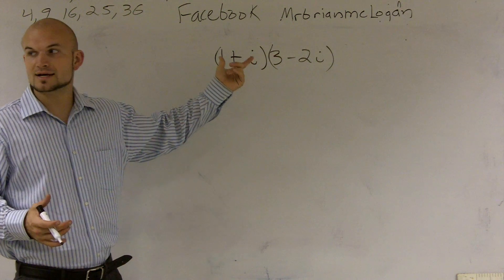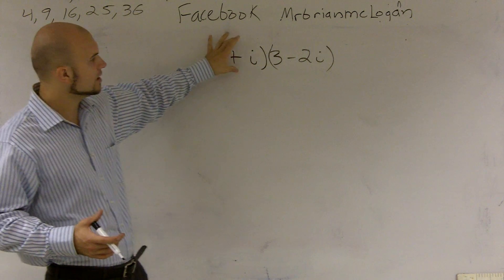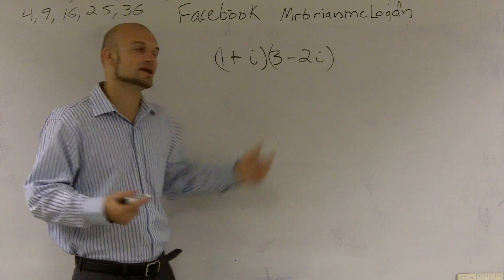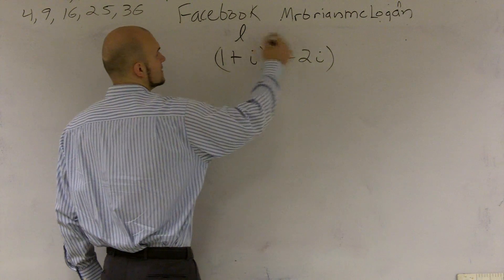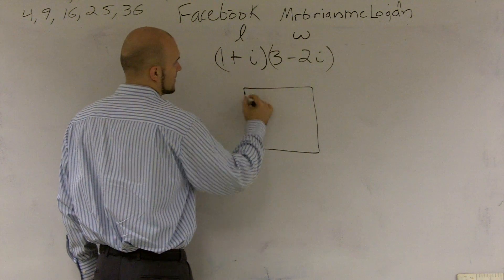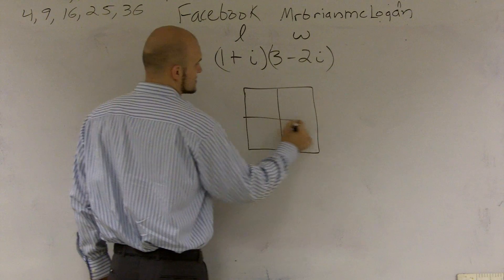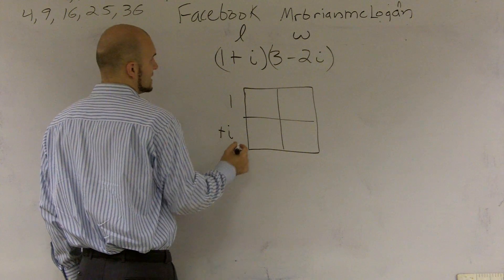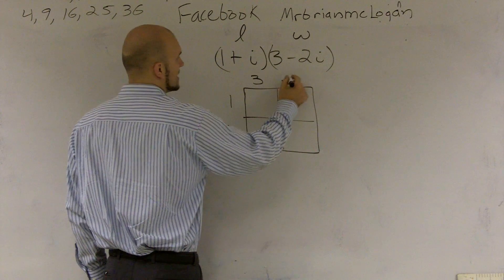If you guys can think of these as one term times another term, the same thing like finding the area. If we could say like this is the length and this is the width. So what I'm going to do is I'm going to draw a box. And for that box, I'll have this be the length, so 1 plus i. And then here I'll have 3 minus 2i.